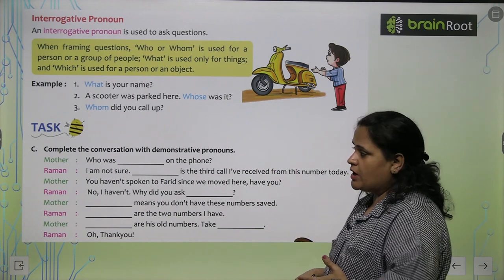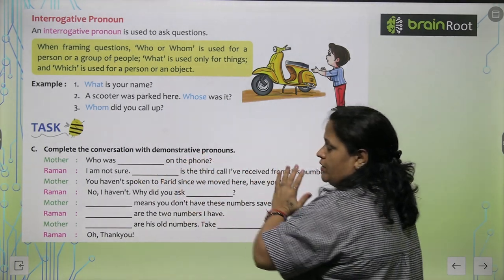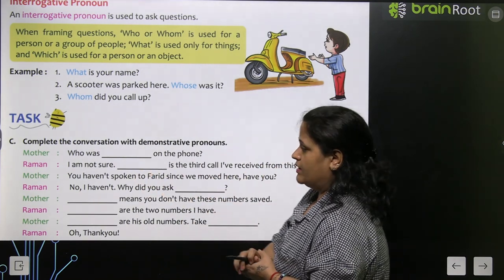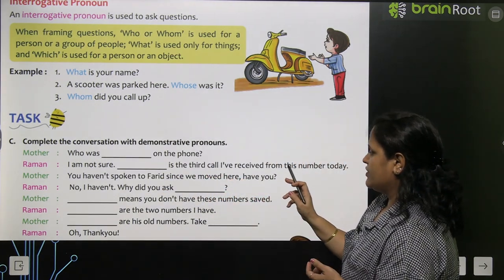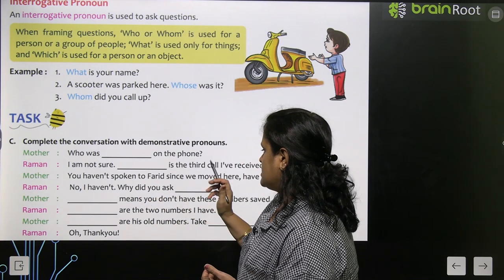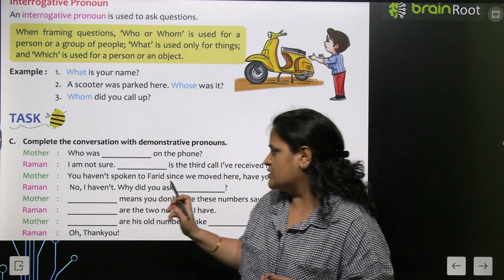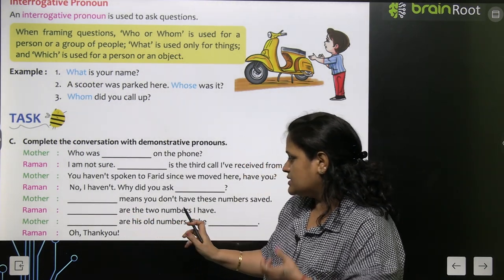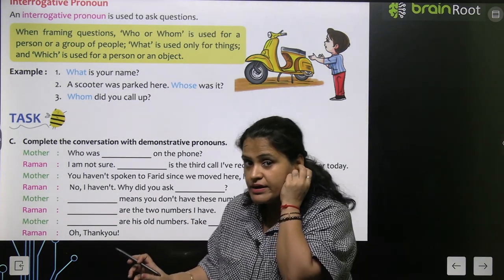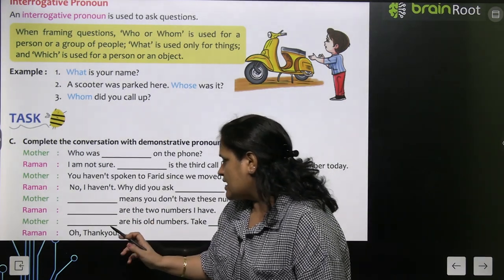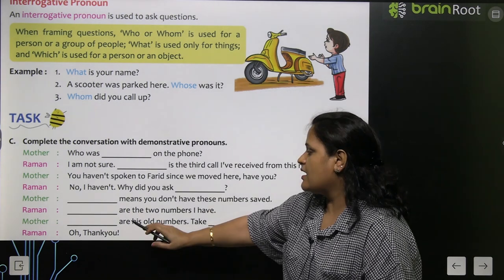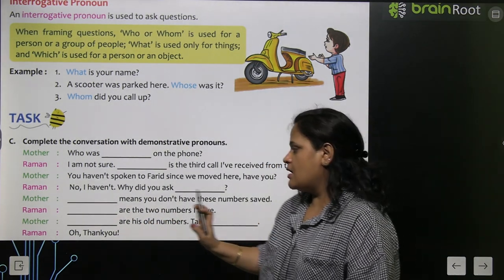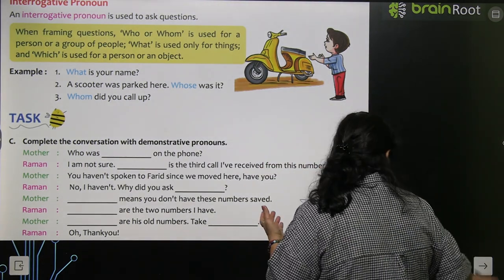Now, complete the conversation with demonstrative pronouns. 'Who was that on the phone? I am not sure. This is the third call I have received from this number today.' 'You haven't spoken to Farid since we moved here, have you?' 'No, I haven't. Why did you ask this?' 'This means you don't have these numbers saved. These are the two numbers I have. Those are his old numbers. Take this.' So we filled in demonstrative pronouns here.